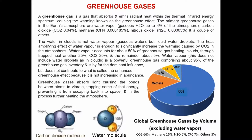The heat amplifying effect of water vapour is enough to significantly increase the warming caused by carbon dioxide in the atmosphere. Water vapour accounts for about 50% of greenhouse gas heating, clouds through trapped heat another 25%, carbon dioxide 20% and the remainder about 5%. Water vapour, which does not include water droplets as in clouds, is a powerful greenhouse gas comprising about 95% of the greenhouse gas inventory and is by far the dominant influence. Water vapour does not contribute to what is called the enhanced greenhouse effect because it is not increasing in abundance.